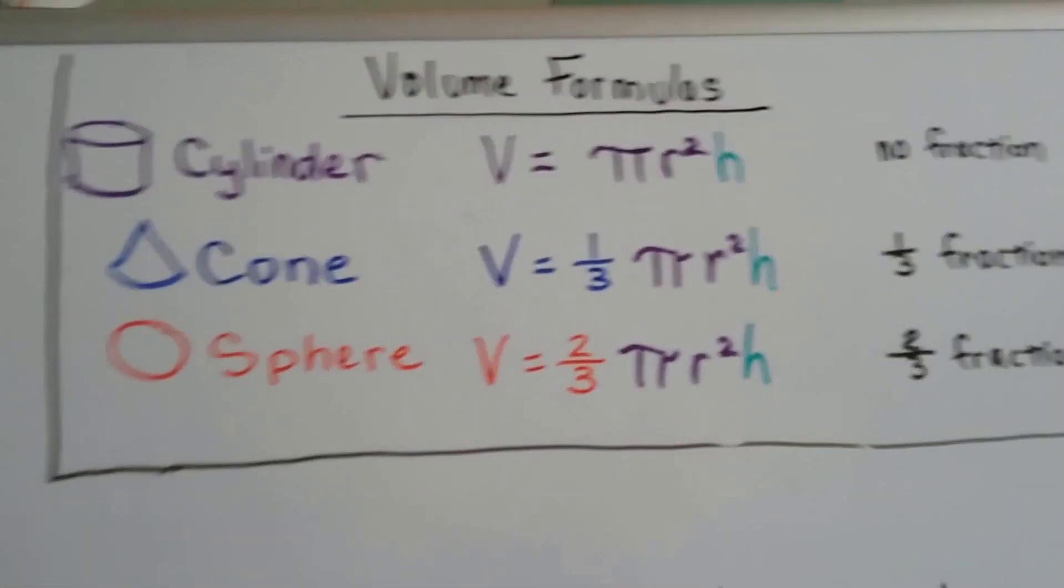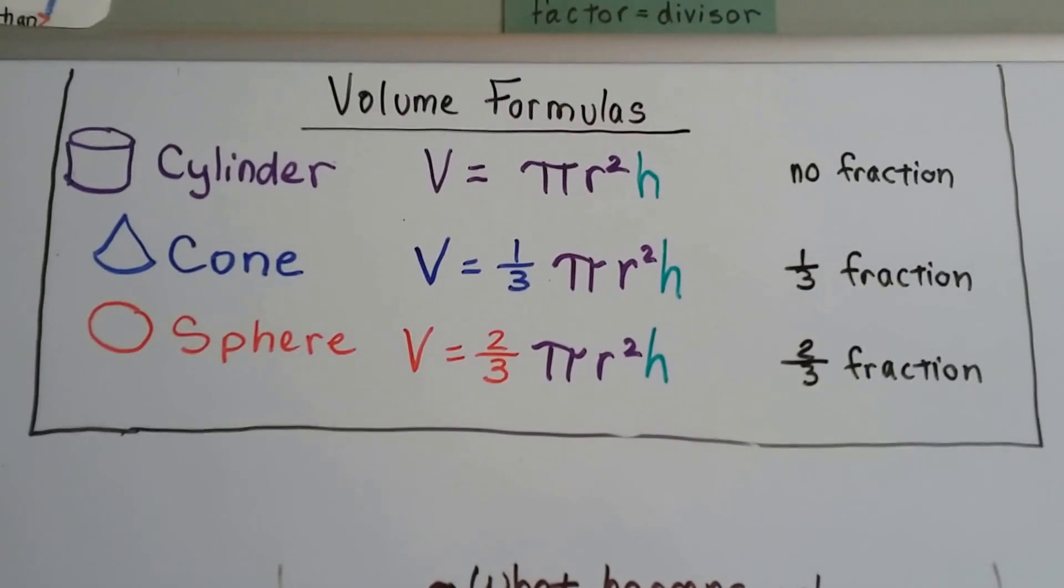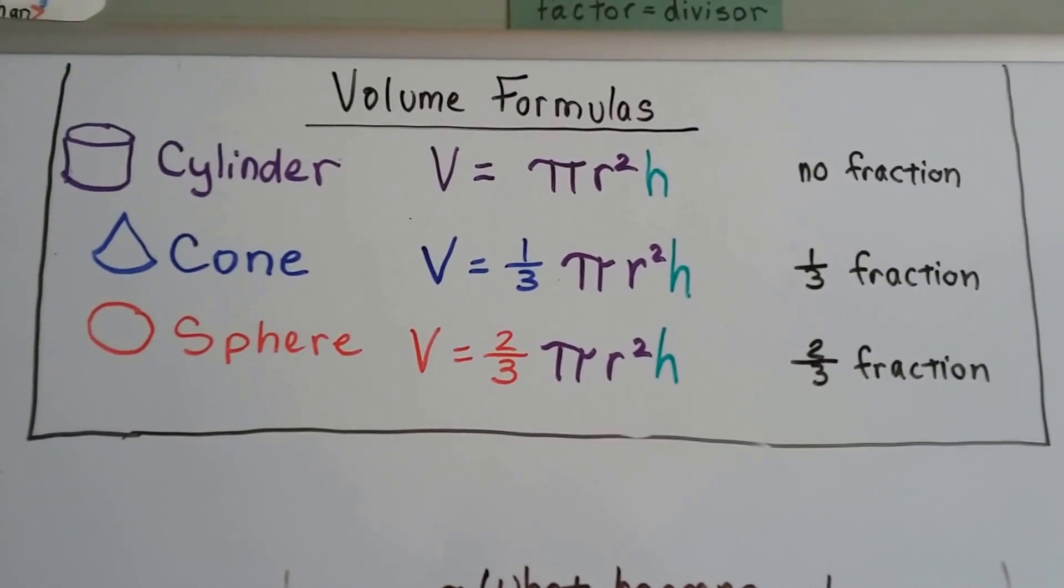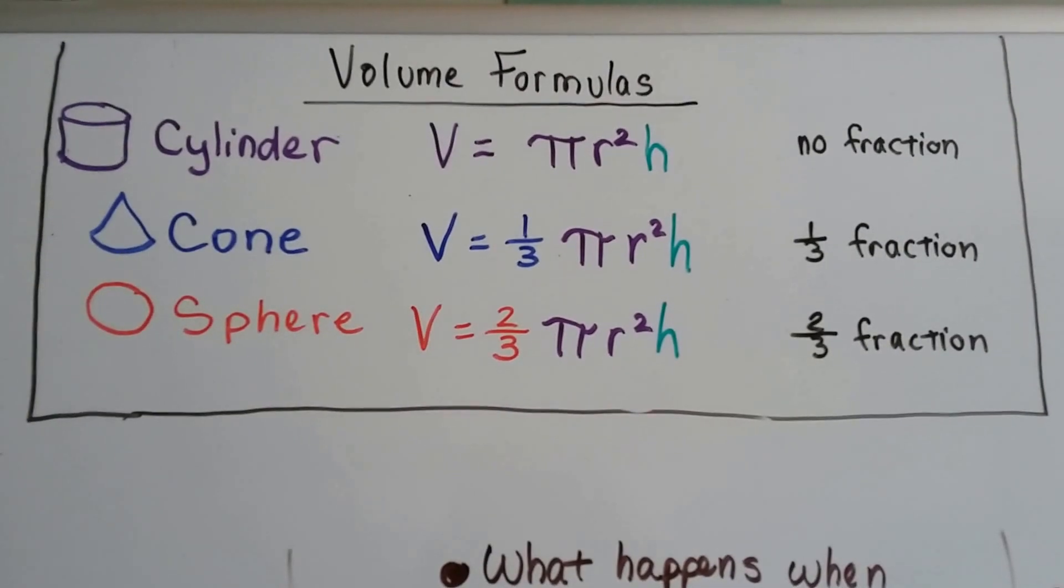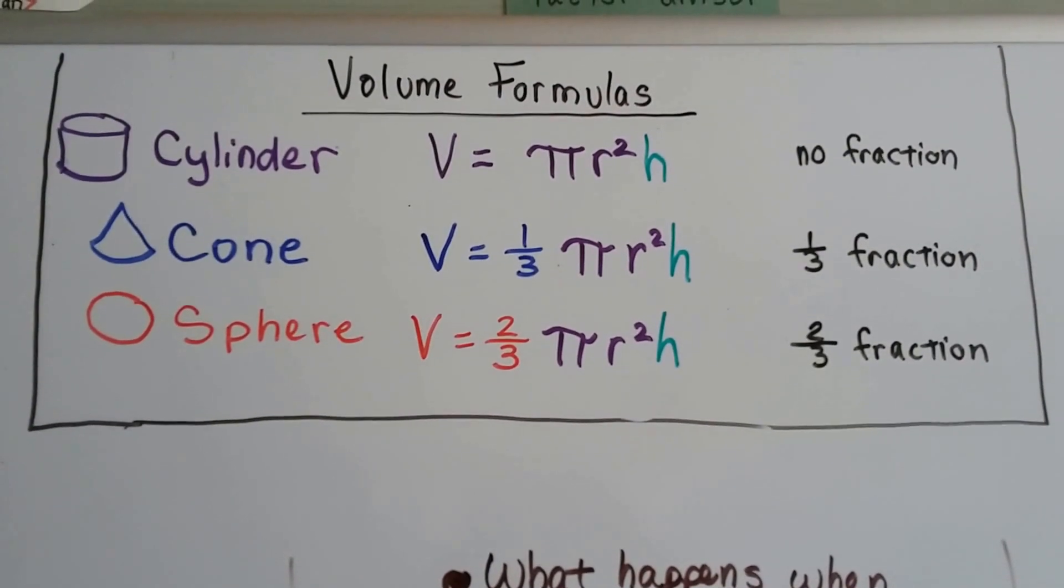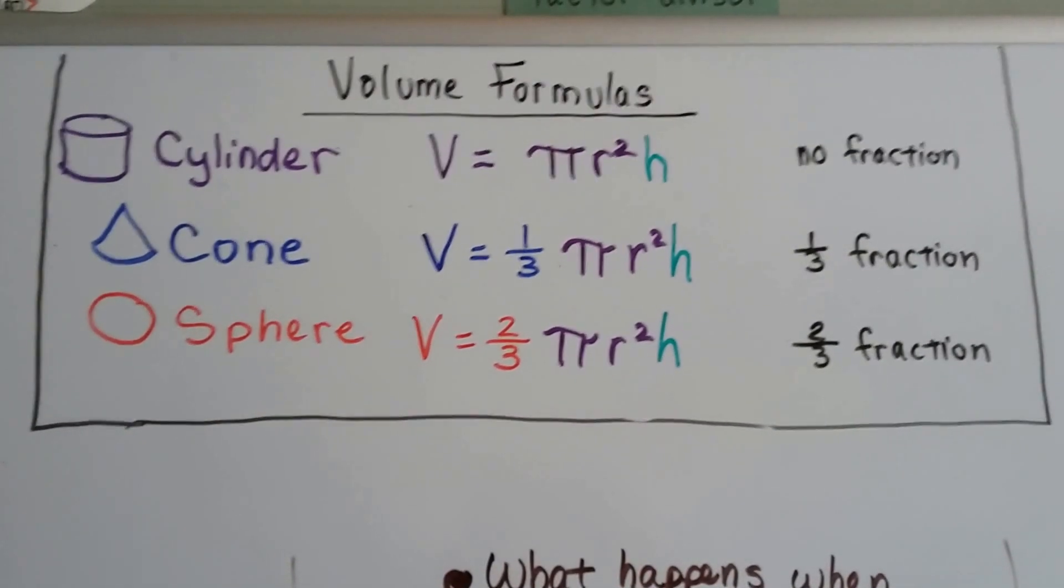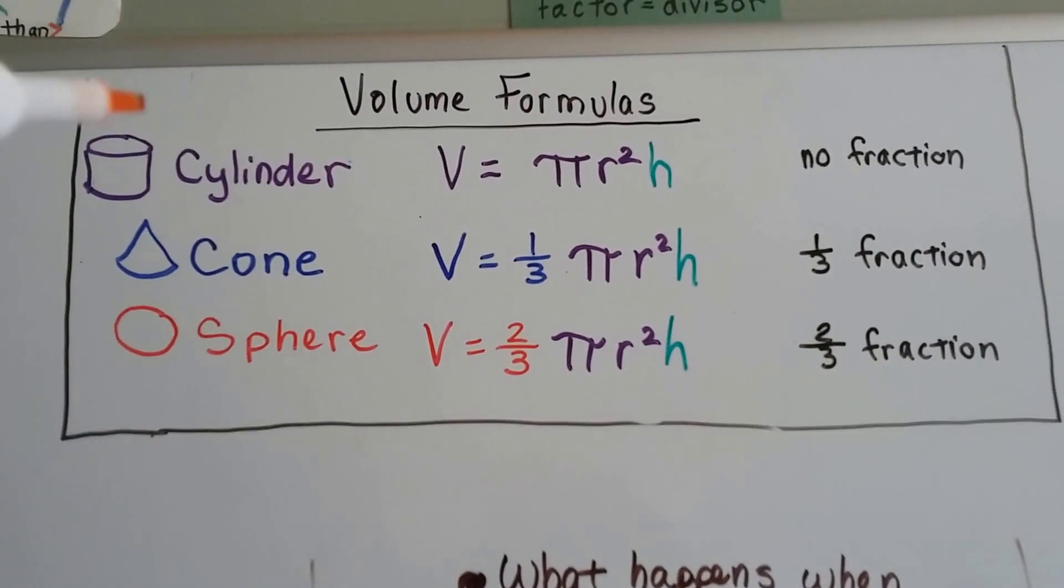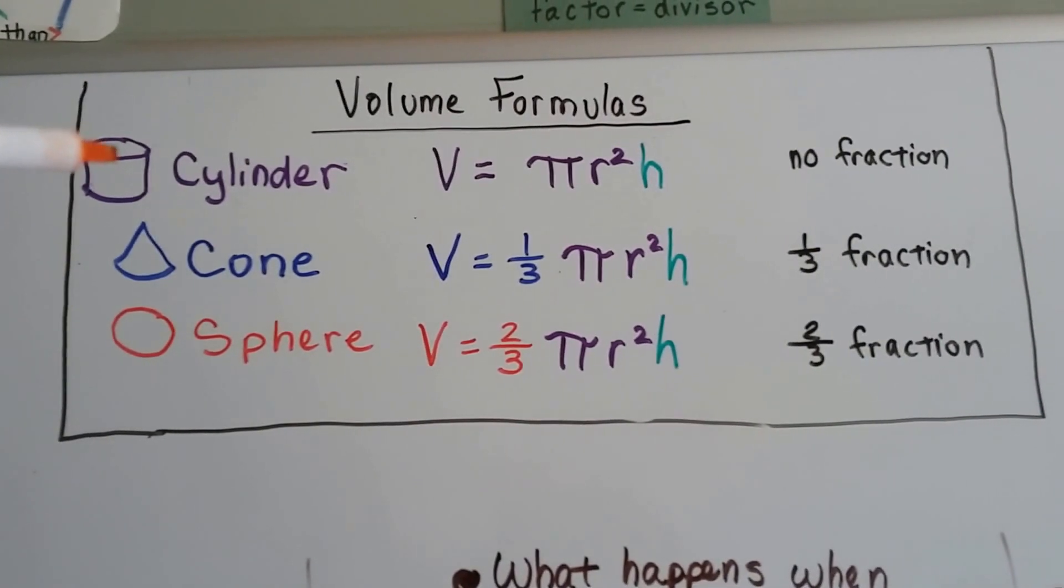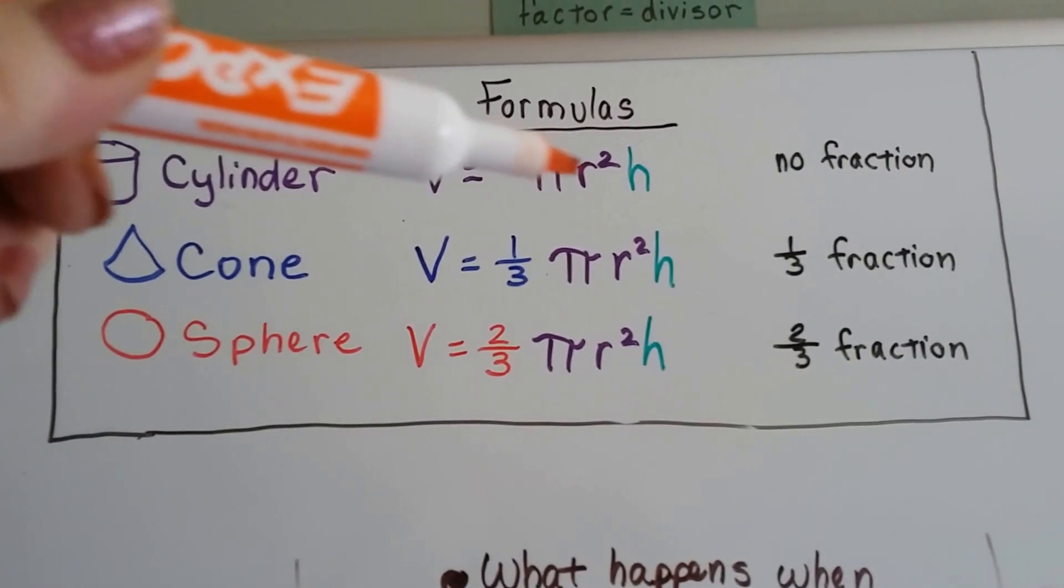Now, I'm going to give you some volume formulas that you need to write down on the inside cover of your spiral or wherever it is that you do it. I always wrote them on the inside cover of my spiral so I could flip to it really fast instead of having to look through all my pages of notes. That way my formulas were really handy. So you need to write these down. And I want you to notice that they're all based off the cylinder one. It's volume equals pi r squared h.